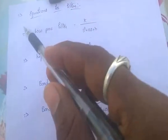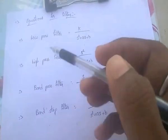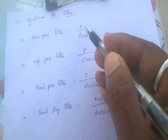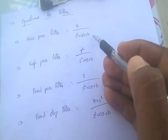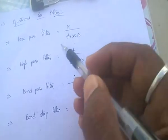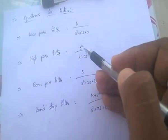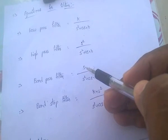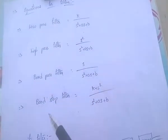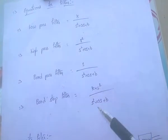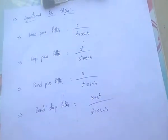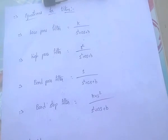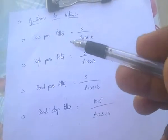These four equations are very important for any competitive exam. For low pass filter: K/(S² + AS + B). For high pass filter: S²/(S² + AS + B). For band pass filter: S/(S² + AS + B). For band stop filter: (K + S²)/(S² + AS + B). Please remember all these equations for the corresponding filters.